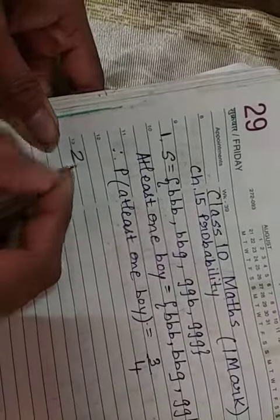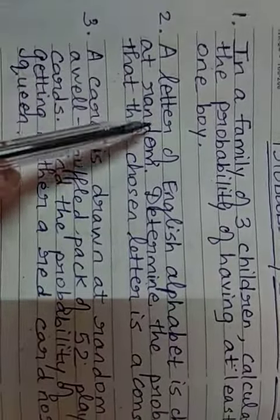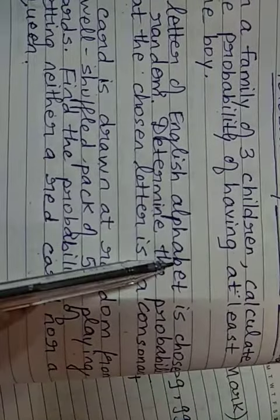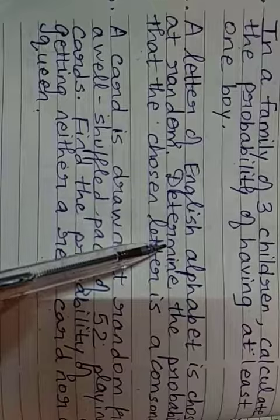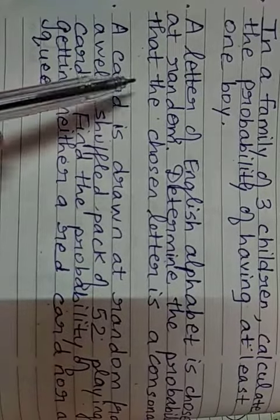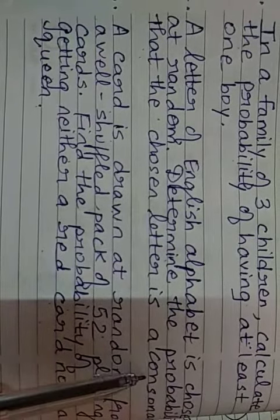So, see here. The first question. Second one, we will see now. See, listen carefully. The question: A letter of English alphabet is chosen at random. Determine the probability that the chosen letter is a consonant.